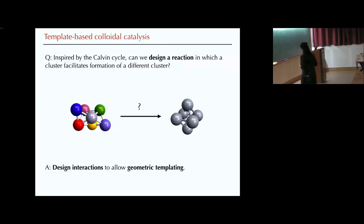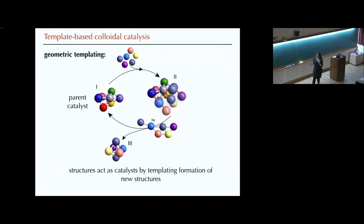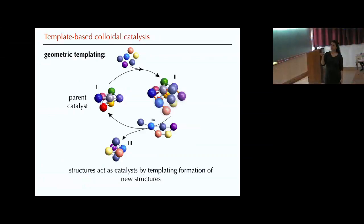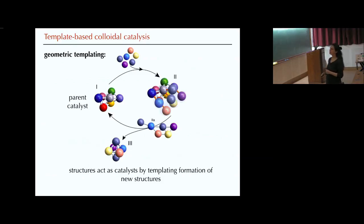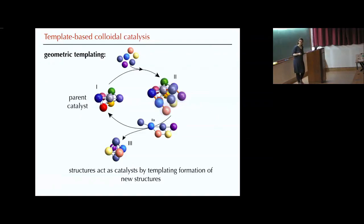The idea is: start from a parent catalyst immersed in a sea of particles that follow some interaction rules. Particles can attach at the surface of our catalyst. Once attached, bonds form. At some point they detach — again, doing this melting and time-dependent interaction thing — and what we are left with should fold into the structure we desire. The question is: can we design interactions to do this?